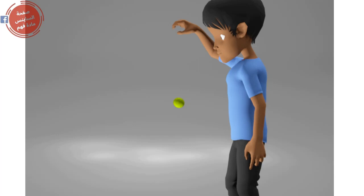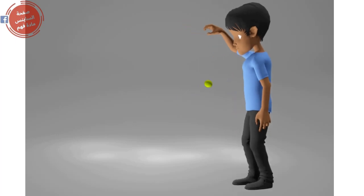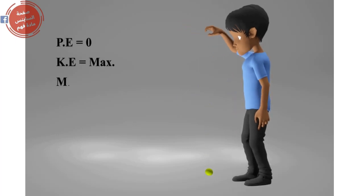Finally, when the ball reaches the ground, the potential energy is totally converted into kinetic energy. As a result, the potential energy equals zero and the kinetic energy reaches its maximum value. Accordingly, in this state you will find that the mechanical energy equals the kinetic energy.